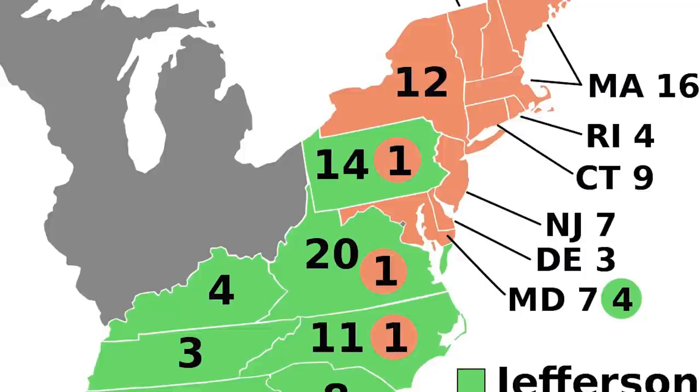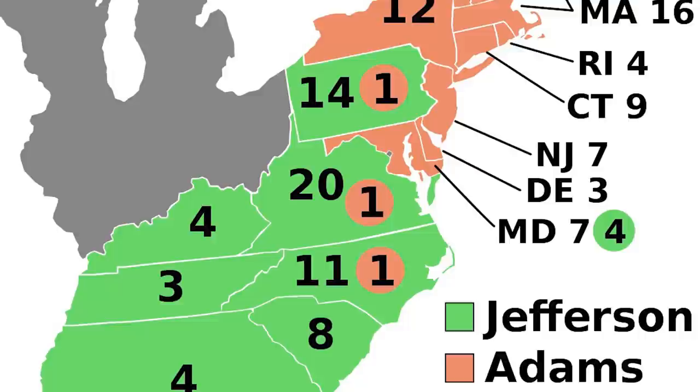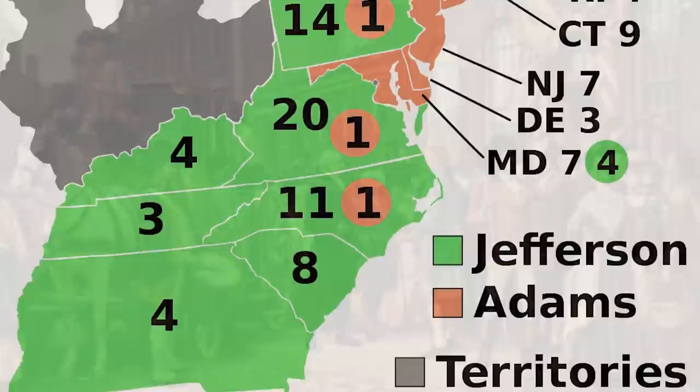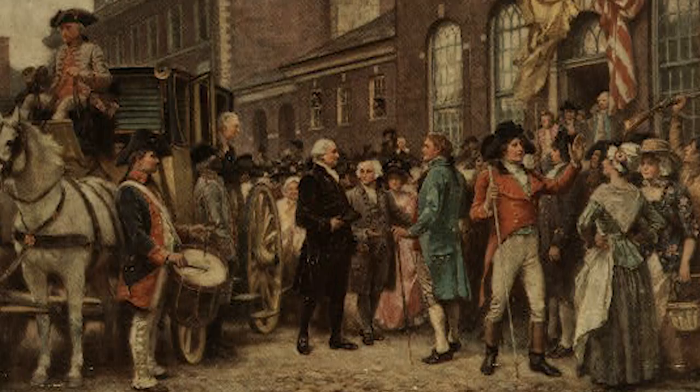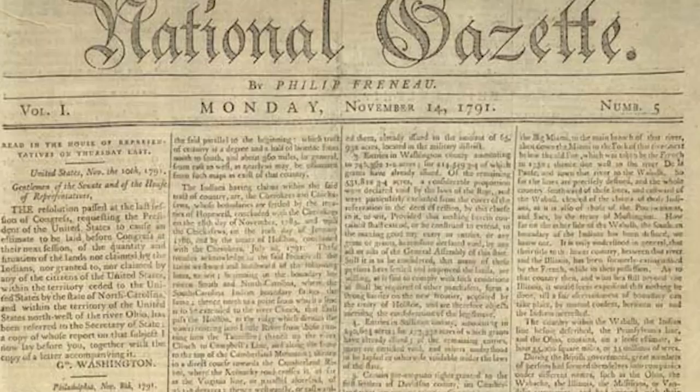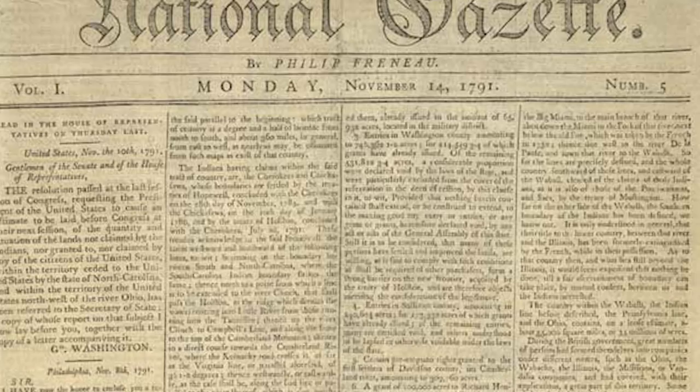The final tally of the Electoral College was 71 votes for Adams and 68 for Jefferson. Under the original rules of the Constitution, the top vote-getter, Adams, was declared president, and the second highest, Jefferson, was named vice president. Having the president and vice president from opposing political parties would prove to be a problem, as Jefferson worked to undermine the Adams administration for the next four years.